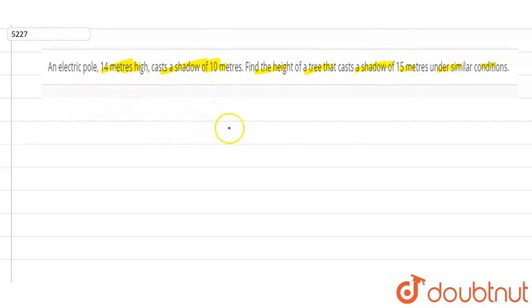If we take the height of the first pole, that is H1, we have a height of 14 meters. The shadow, that is S1, is 10 meters.